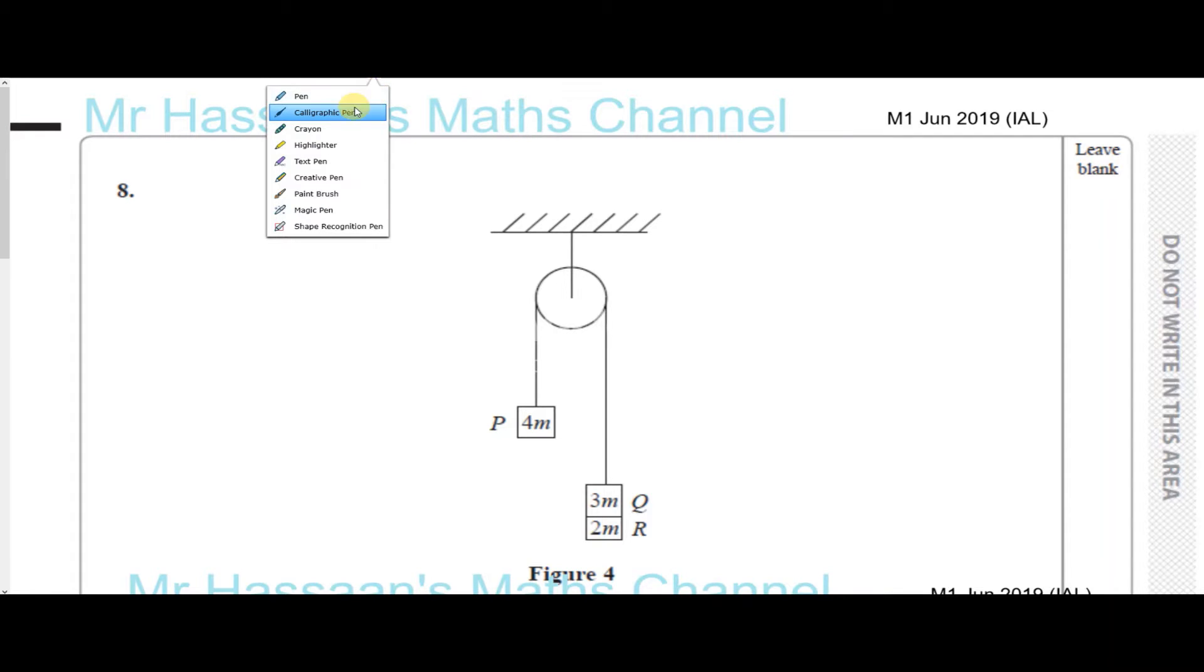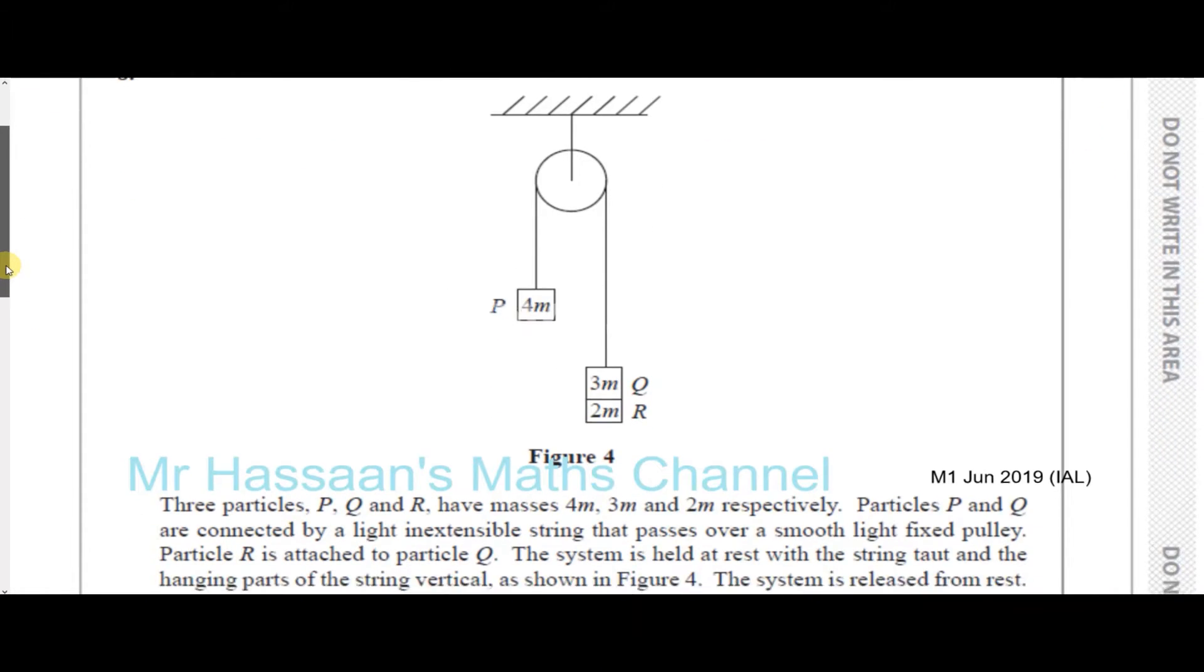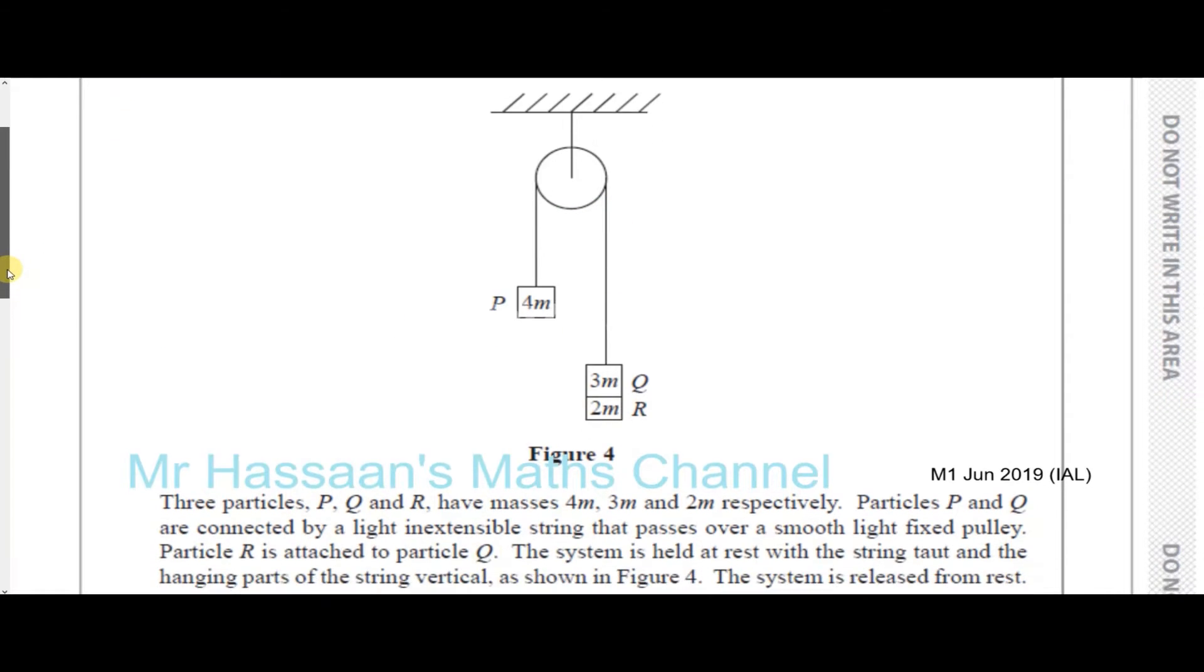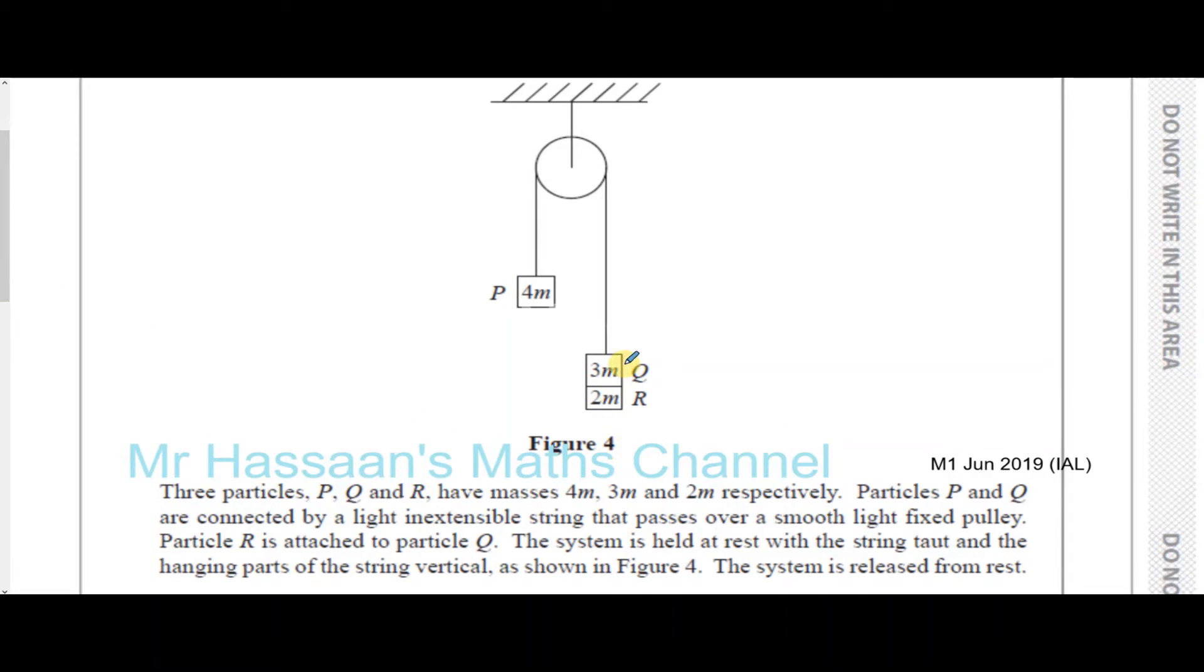In this question we are told that we have three particles P, Q and R with masses 4M, 3M and 2M respectively as you can see in the diagram. Particles P and Q are connected by a light inextensible string that passes over a smooth light fixed pulley. Particle R is attached to particle Q. The system is held at rest with the string taut and the hanging parts of the string vertical as shown in figure 4. The system is released from rest. Find the acceleration of particle P and the tension in the string.